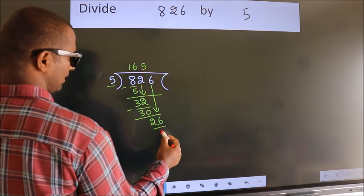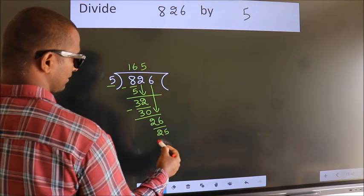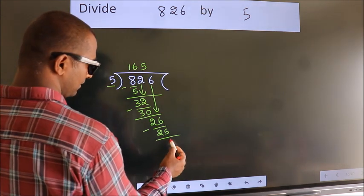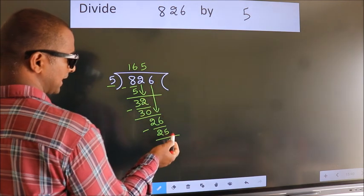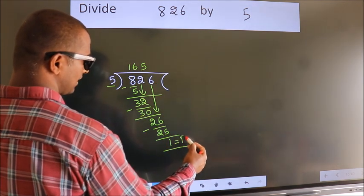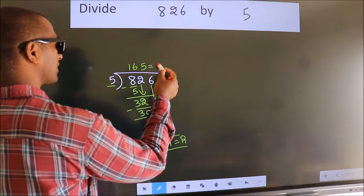Now we subtract, we get 1. No more numbers to bring down, so we stop here. This is our remainder, this is our quotient.